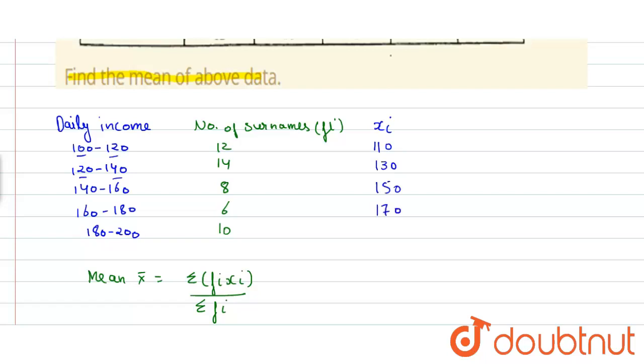The fi xi is equal to 12 into 110 which is equal to 1,320 and 14 into 130 which is equal to 1,820 and similarly 1,200, 1,020 and 1,900.